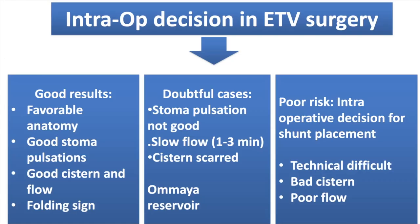To summarize intraoperative decision-making during ETV: results are likely good with favorable anatomy, good stomal pulsations, good cisterns, good dye flow, and the folding-in sign — posterior third ventricle wall folding — seen in a few percent of patients. Doubtful cases have suboptimal stomal pulsations, slow dye flow (one to three minutes), and scarred cisterns — an Ommaya reservoir can be used alongside ETV. Poor-risk cases warrant intraoperative shunt placement when ETV is technically difficult, anatomy is not well visualized, cisterns are bad, and dye flow is poor.